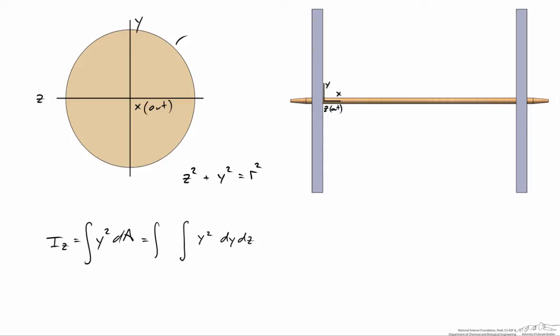Solving for the upper part of the circle gives y = √(r² - z²), and the lower part is y = -√(r² - z²).